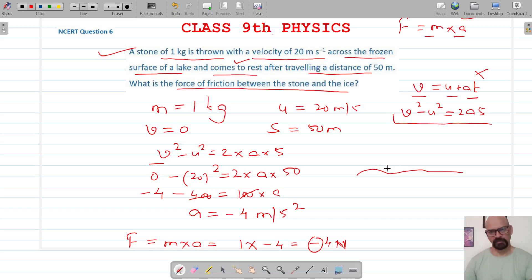Let's say if this is the lake and if we have thrown a stone in this direction, the force of friction is in the opposite direction. That's why we have this negative sign. So with this we are done with question number six. Do like, share, and subscribe. Thank you for watching.